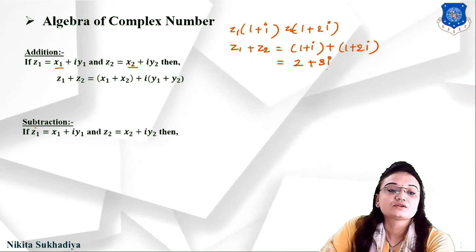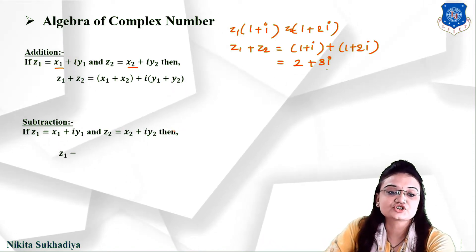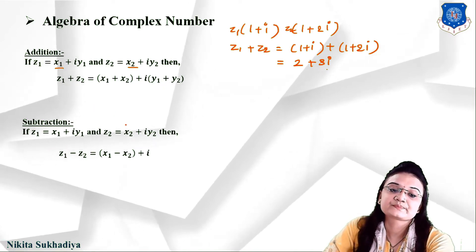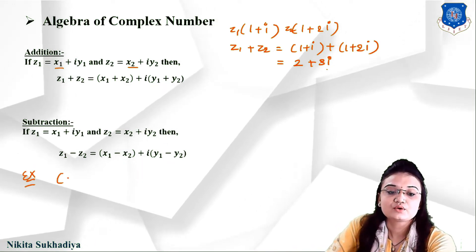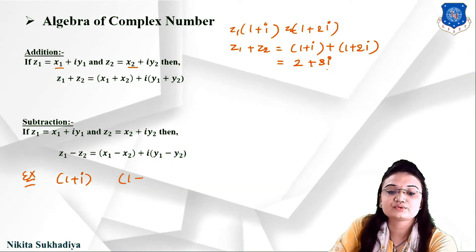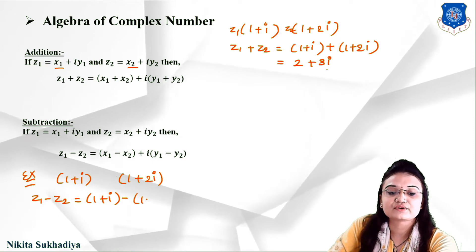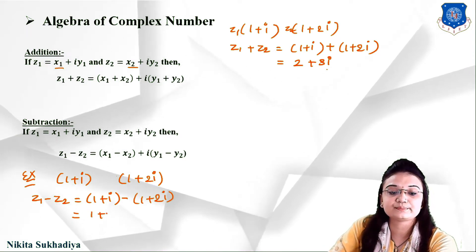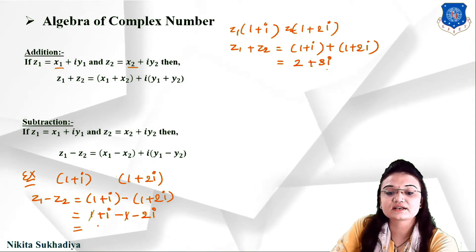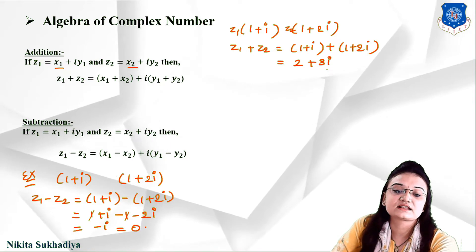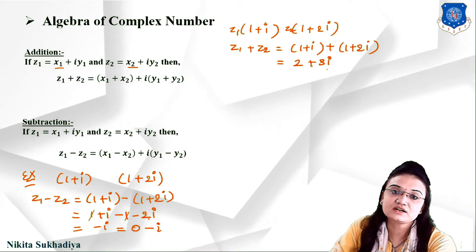For subtraction, if z1 equals x1 plus iy1 and z2 equals x2 plus iy2, then z1 minus z2 equals (x1 minus x2) plus i(y1 minus y2). For example, with z1 equals 1 plus i and z2 equals 1 plus 2i, z1 minus z2 equals (1 minus 1) plus (i minus 2i) equals 0 minus i, which is purely imaginary with real part 0 and imaginary part 1.